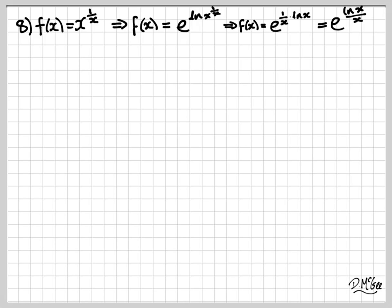This is quite a common technique. What we do first is we write f of x equals e to the ln of x to the 1 over x. Of course, that's the same as the function we started with, but now we can bring that power of 1 over x to the front of the ln x to give us that f of x is equal to e to the 1 over x times ln x.